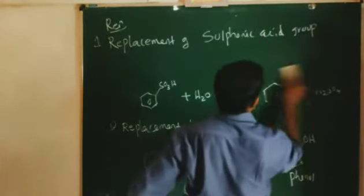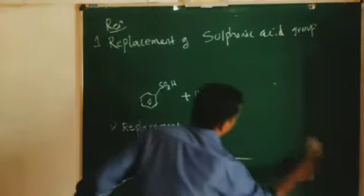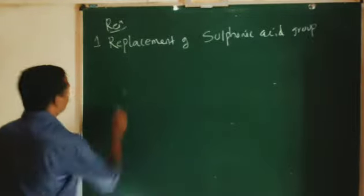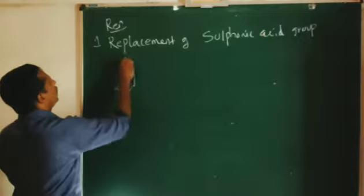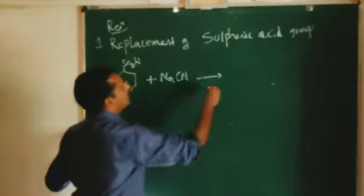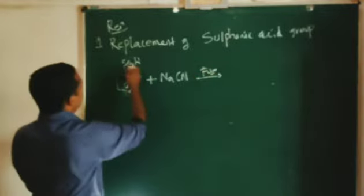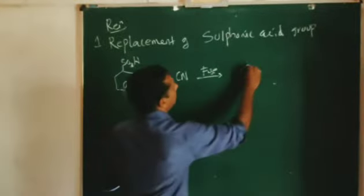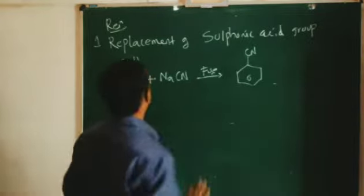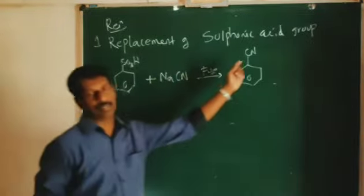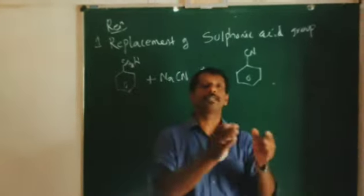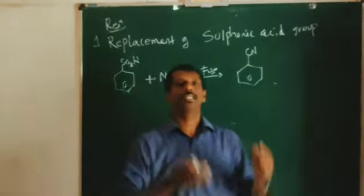The third replacement reaction is replacement by CN group. When benzene sulphonic acid, C6H5SO3H, is treated with sodium cyanide (NaCN) fused, the SO3H group is replaced by CN, and we get cyanobenzene. So the first category of reactions involves replacement of the sulphonic acid group by hydrogen, then OH, then CN.